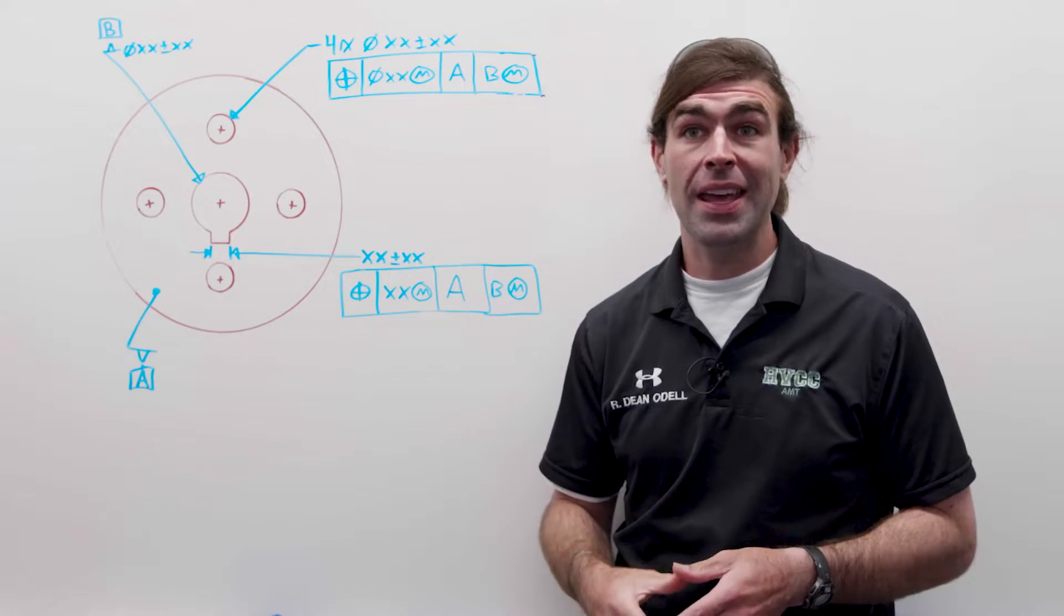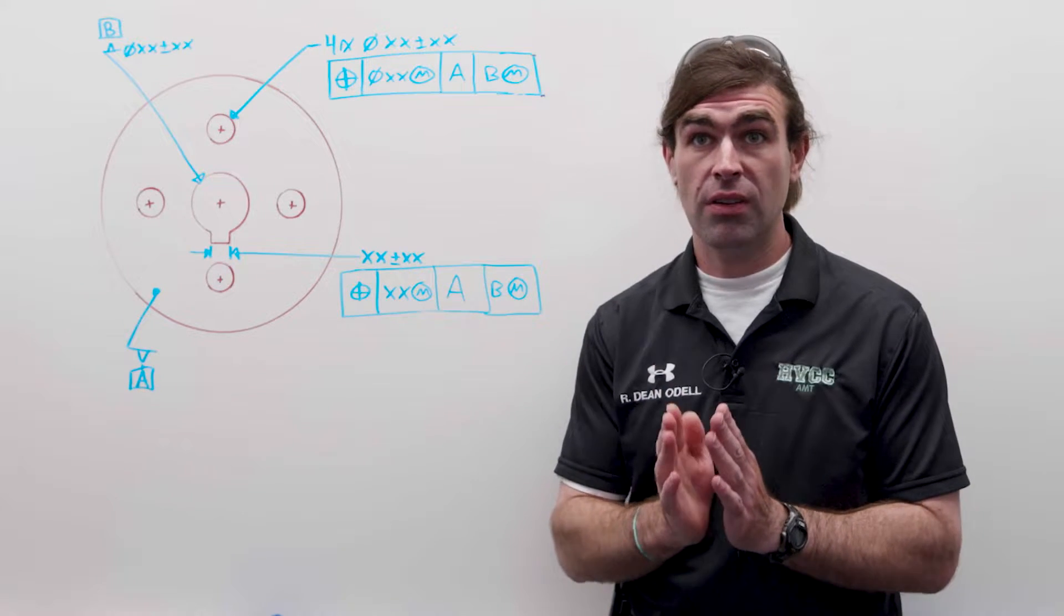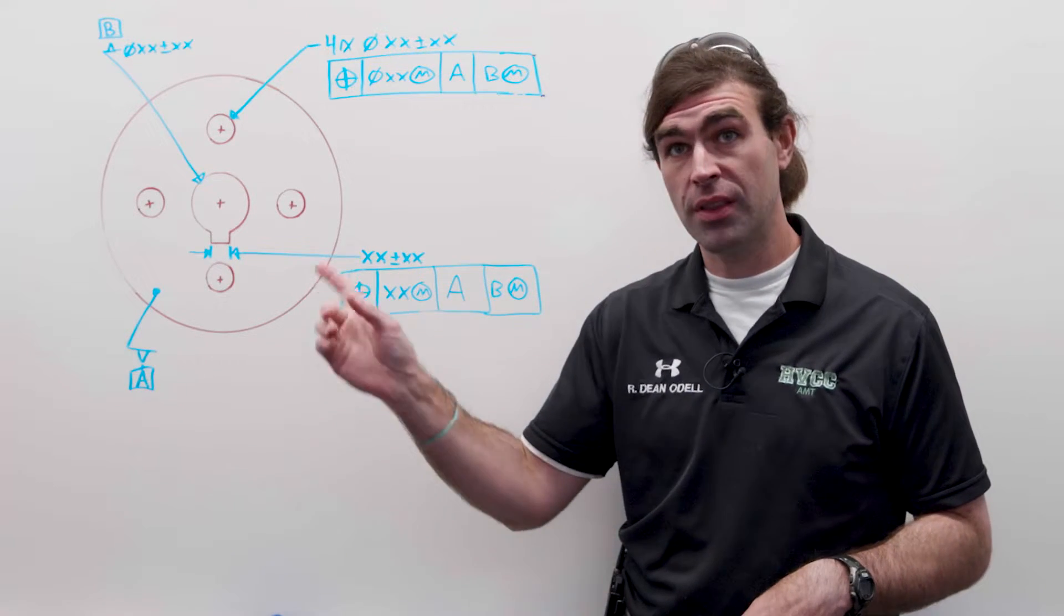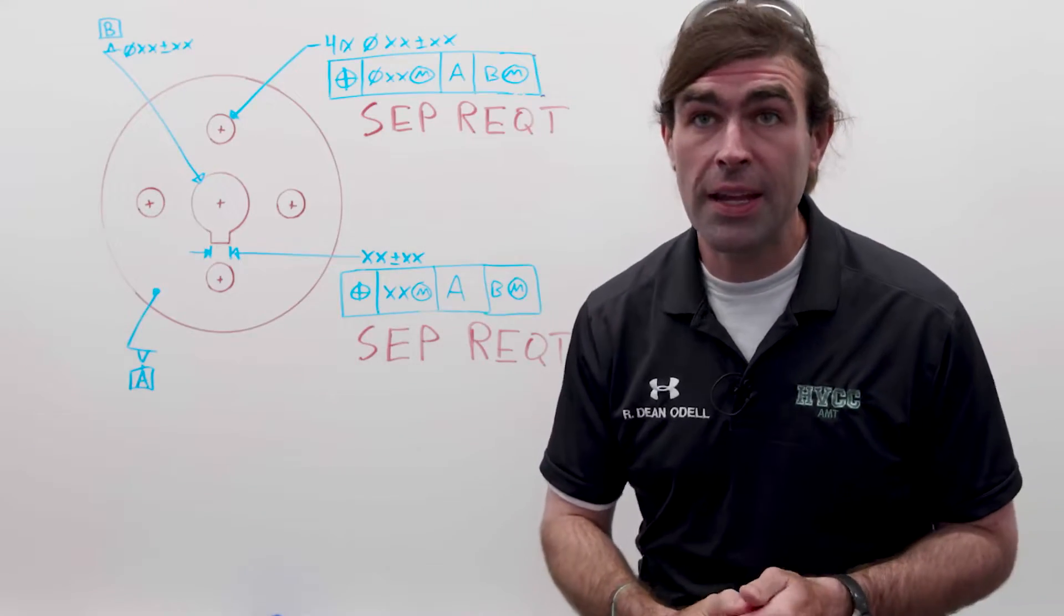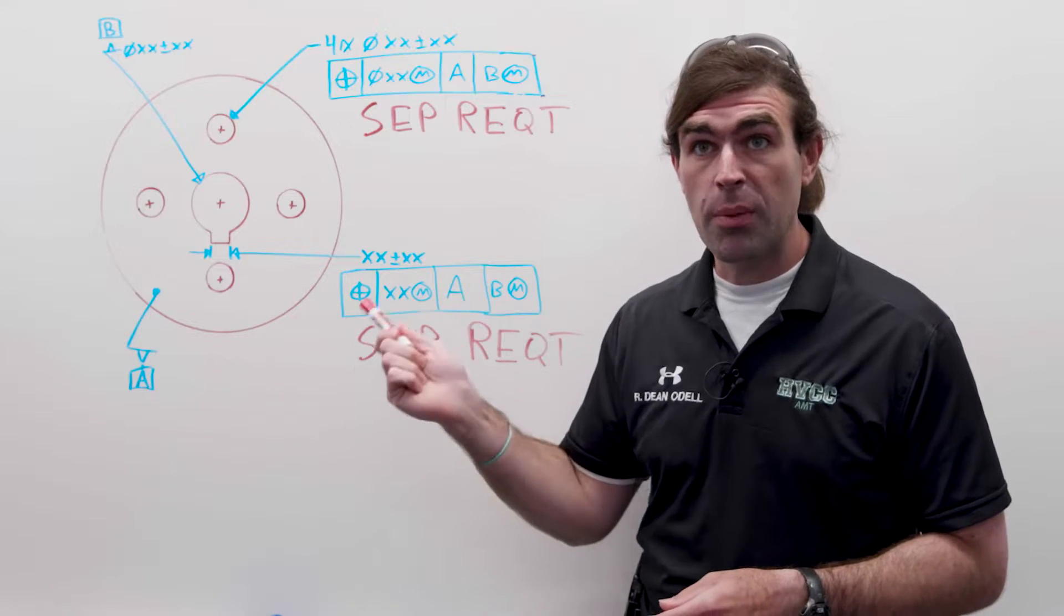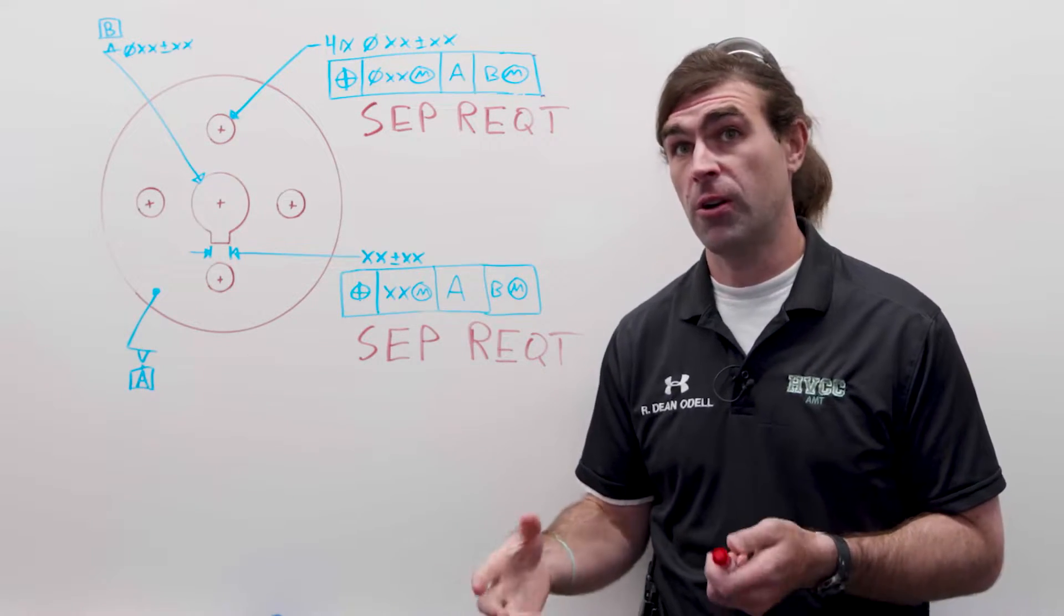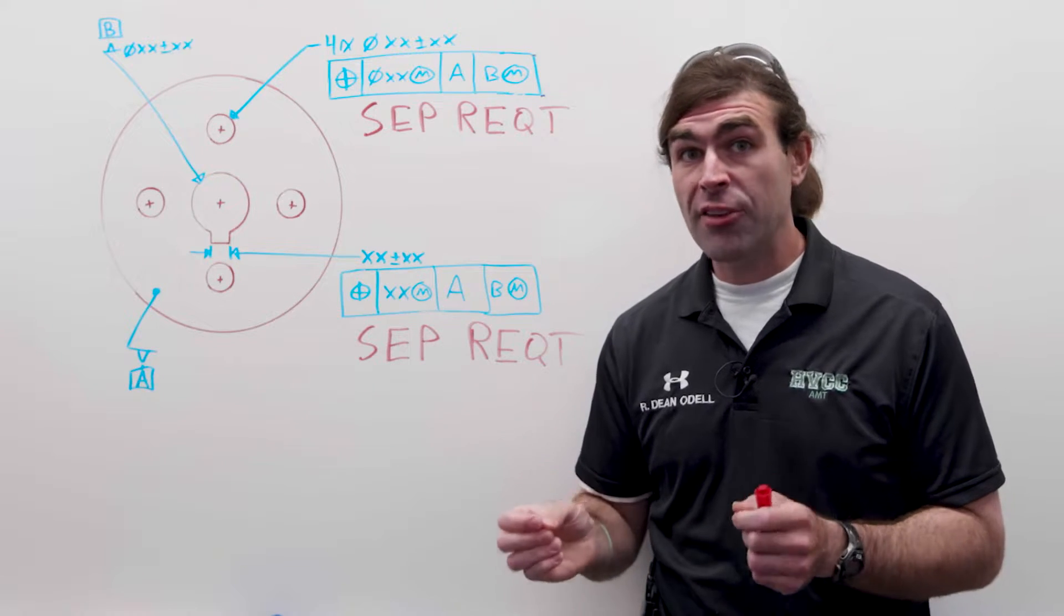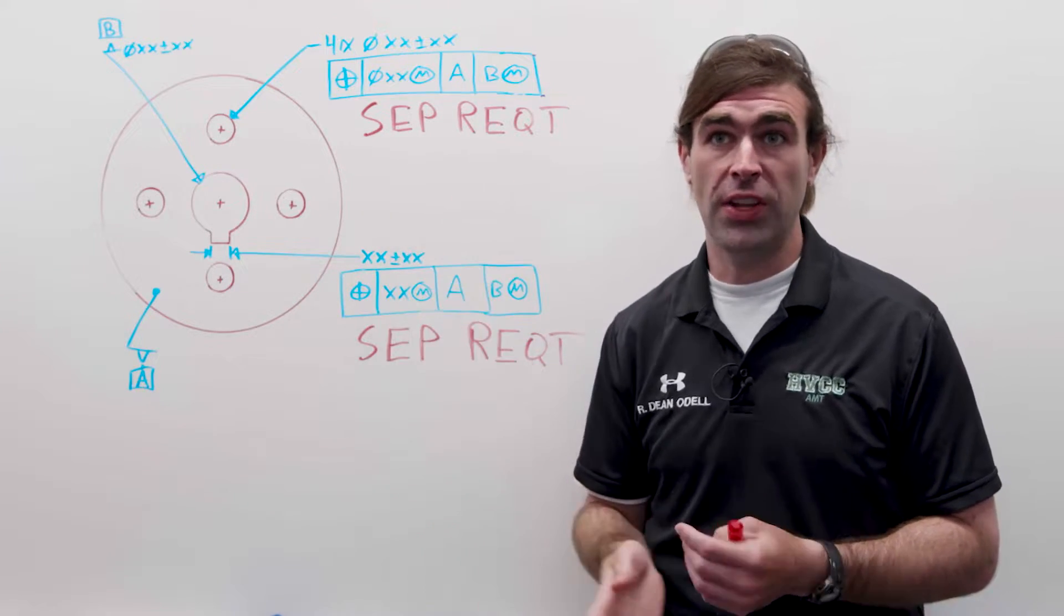Now, there is a way to separate the requirement for the orientation of the keyway from the holes. The way we do that is by writing the abbreviation separate requirement under each feature control frame where it applies. Now, the ASME standard says write something such as this, S-E-P-R-E-Q-T.